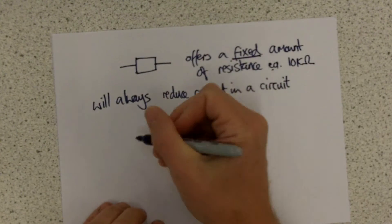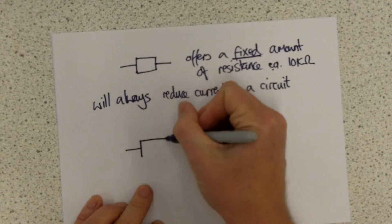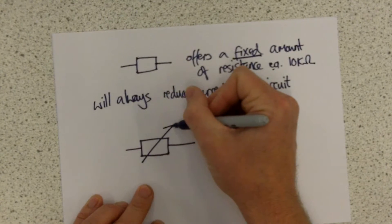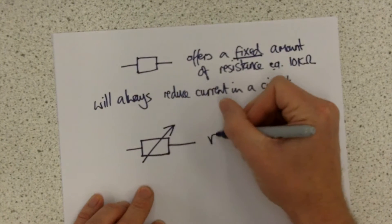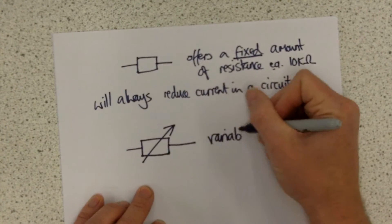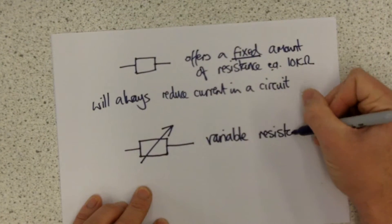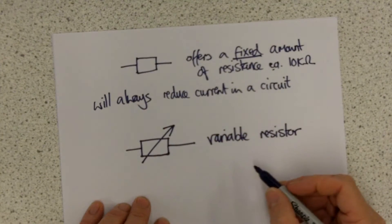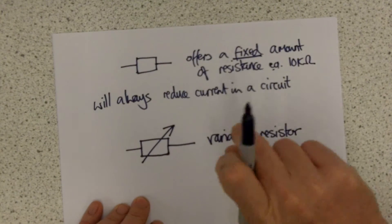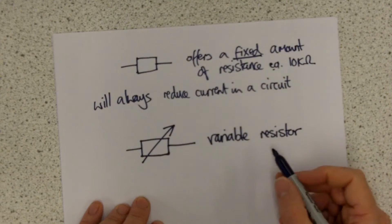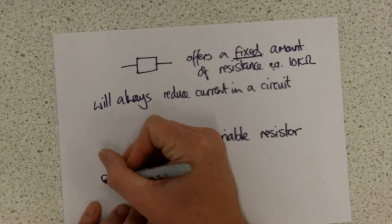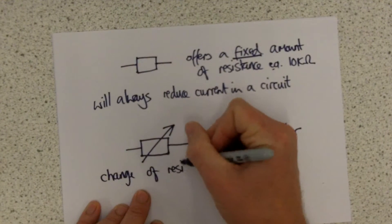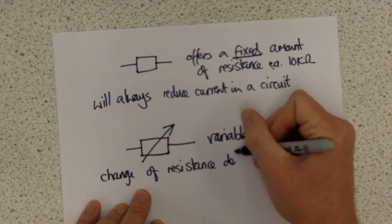A slight variation on that is what we call a variable resistor, or rheostat, which has this symbol. This is a resistor whose resistance can change. You can either slide a slider or dial a knob and the resistance will change. This offers a change of resistance determined by the user.